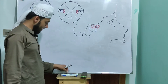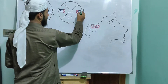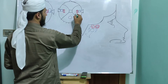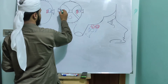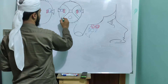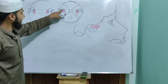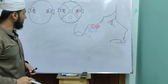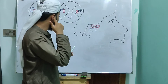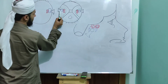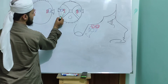As we have discussed, the internal ear is situated in the petrous part of the temporal bone. This is the petrous part of the temporal bone. This is the middle ear cavity, and this is the internal ear located here.